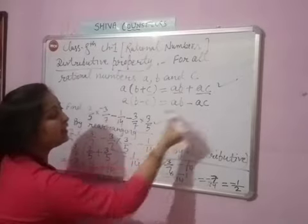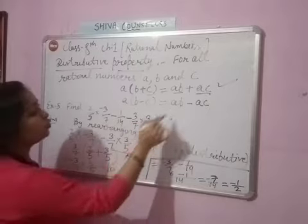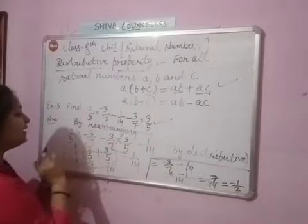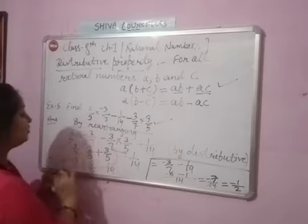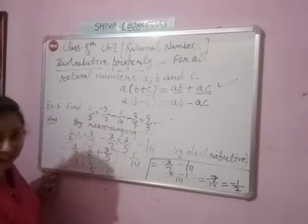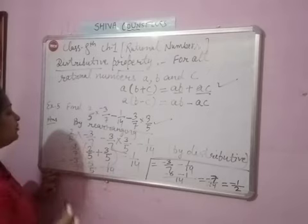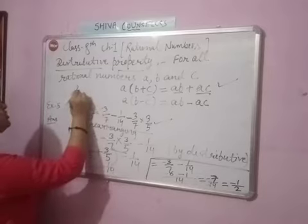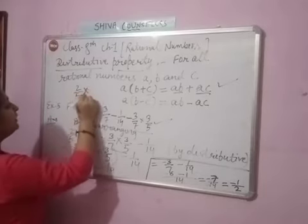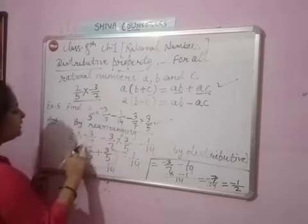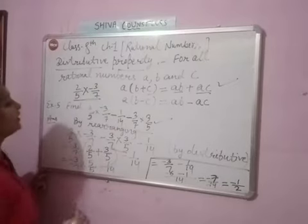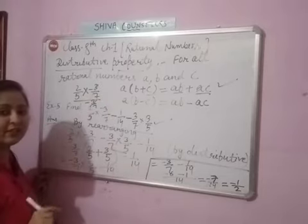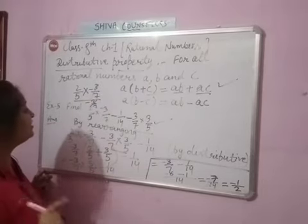Now what is a? A which is common. What is a common? Minus 3/7. So both common are minus 3/7. We have taken minus 3/7 common. This means this term is 2/5 multiply minus 3/7. Minus 3/7 divided by minus 3/7 will be cancelled, will be 2/5.